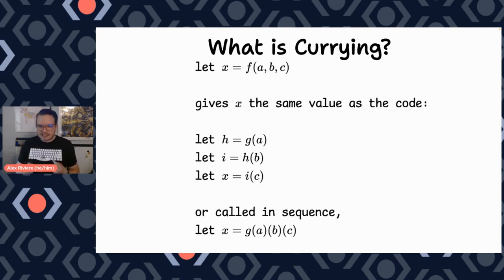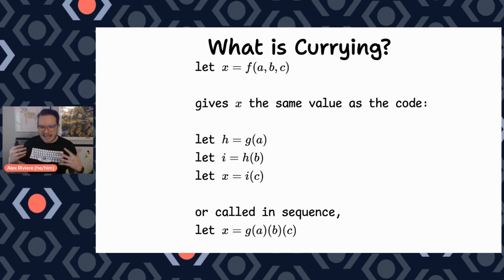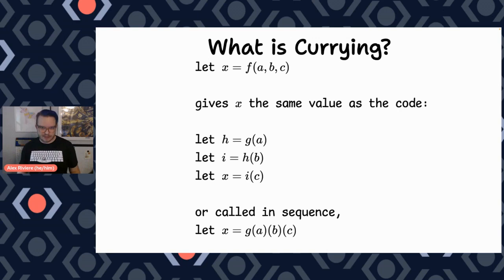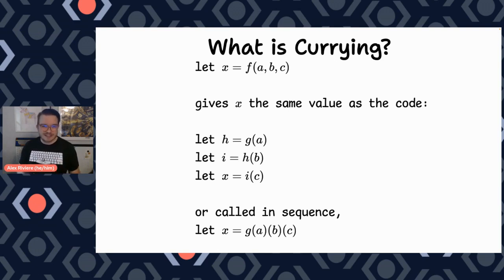So in mathematics, you can express a function as x equals function of a, b, and c. Haskell came up with a way that's mathematically provable where you can assign a function to each argument and have them be called in succession and it will produce the same output. I will be honest with you — I've read the Wikipedia article, I've tried to have somebody explain this to me, and I don't have the education background to fully understand this, but just know this is where the idea of currying comes from — it's math.